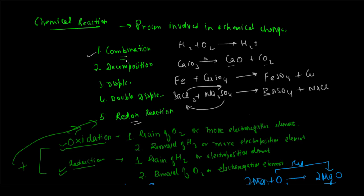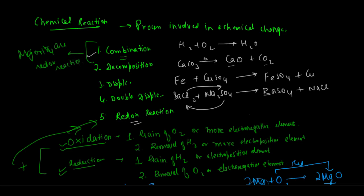Now let us try to analyze these reactions and see whether some of them are redox reactions or not. If we look at the combination reaction and take the example hydrogen plus oxygen gives water: here hydrogen combined with oxygen is getting oxidized, forming water — that is oxidation. And oxygen is combining with an electropositive element such as hydrogen and forming water — so oxygen is being reduced. Therefore it is a redox reaction. Similarly, the majority of combination reactions are redox reactions.